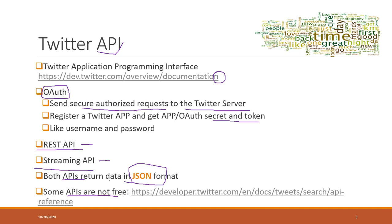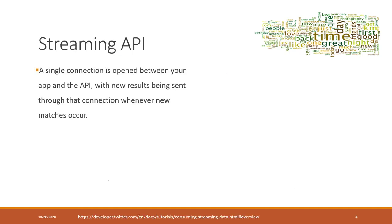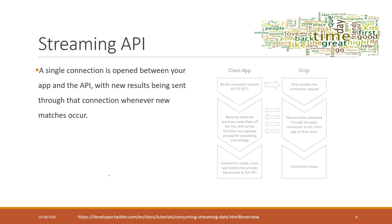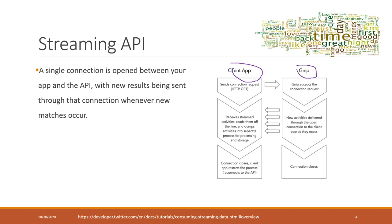The Stream API basically creates a connection between your client and the Twitter server. Once the connection is established, based on the queries you defined, they will send back all the tweets in real time. When you establish those connections, you will send your API keys and secrets so that Twitter knows you are authorized to get that information, and you will receive it in near real time.